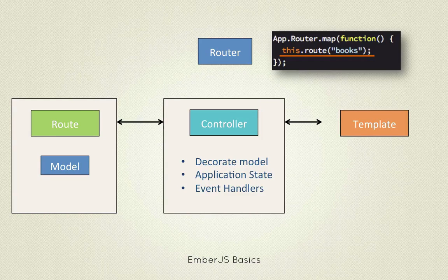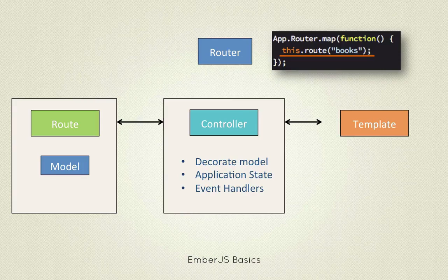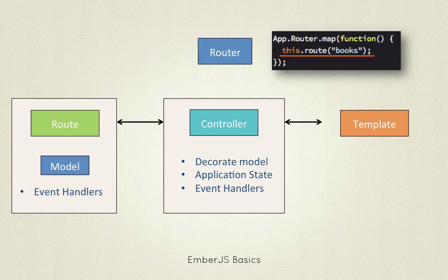The last controller responsibility is event handling. Templates can generate events or actions in Ember. For example, when a user clicks on a button in a template, the template generates a 'hide description' action and sends it to the controller. The controller can catch this action and process it. If there is no event handler in the controller, it will bubble it up to the route object, which means the route object also has this responsibility. We'll see all of this in action during the course.